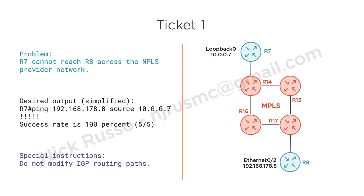Here's the first troubleshooting ticket, and the other 19 have the same format. There's a clear problem statement with no fanfare or sugarcoating, followed by the desired output to indicate success. I've summarized this output a bit to make it easier to understand — in this case, R7 needs to ping R8 sourced from its loopback. Some tickets have special instructions, which may add new limitations or remove old ones, so pay close attention. On the right, I show a diagram to help focus your attention. I promise that only the devices shown in this diagram need to be edited for any given ticket. In this case, the faults are limited to these six devices.